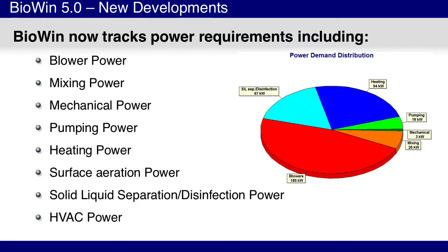Biowin 5 tracks power requirements for a number of predefined categories including blower, mixing, mechanical, pumping, heating, surface aeration, solid liquid separation, disinfection, and heating, ventilation and cooling power. These power categories allow the power requirements to be easily displayed.